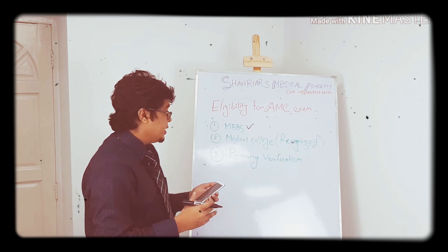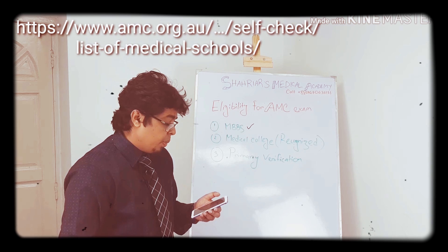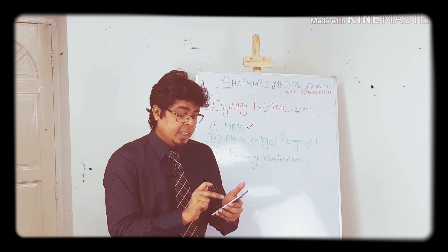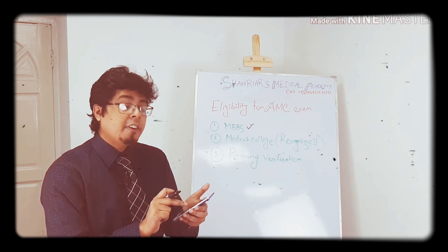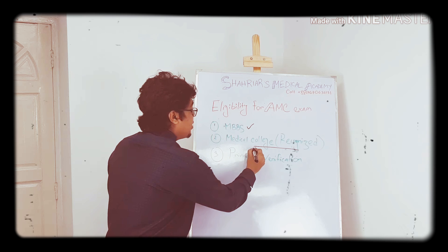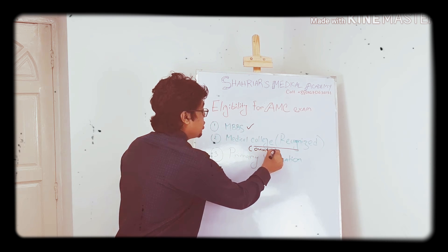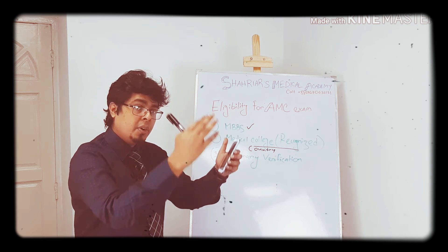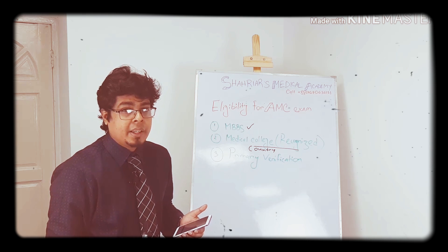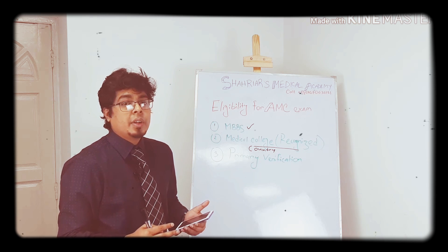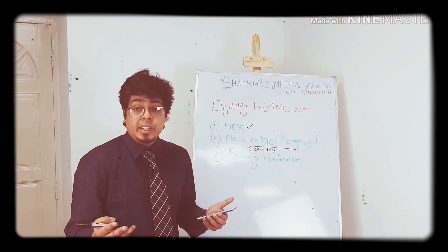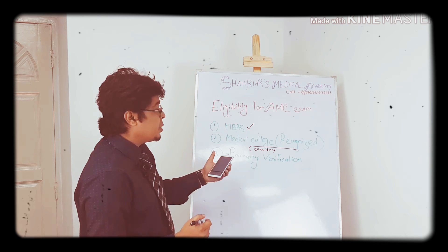Now, medical college recognition - what does it mean? If you go to www.amc.org.au, this website has a section called list of medical schools. You need to go and click on the country. You choose the country, then they will show you the list of all the medical colleges. From the medical colleges, you find out your own medical college. In 99% of cases, your medical college is eligible.